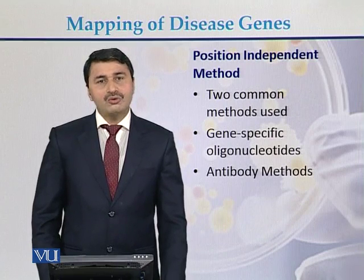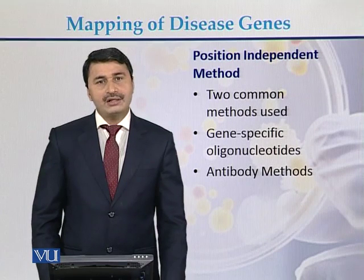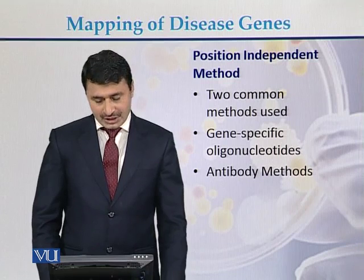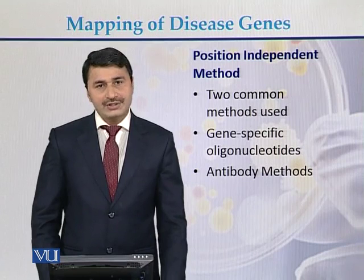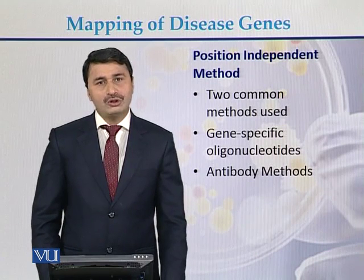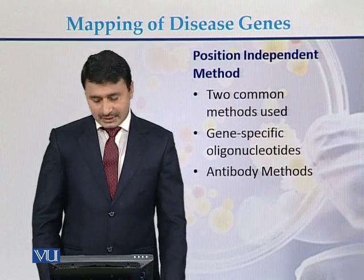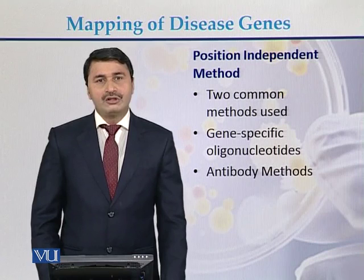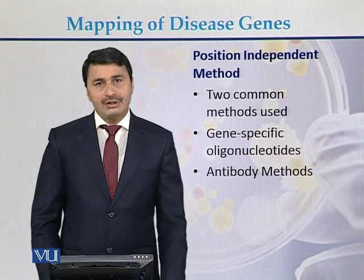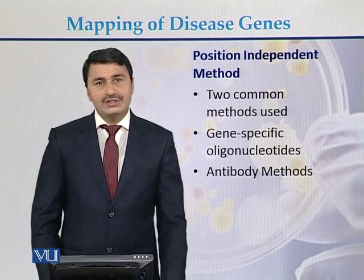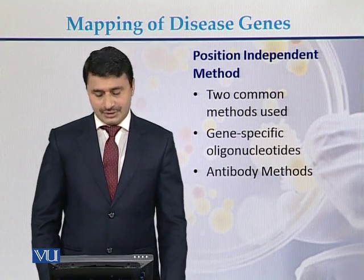There are two common methods for position independent identification of genes. They are called gene-specific oligonucleotides — meaning genes are identified with the help of gene-specific oligonucleotides — and the second method is the antibody method. With the help of the antibody method, we move towards the identification of disease genes.